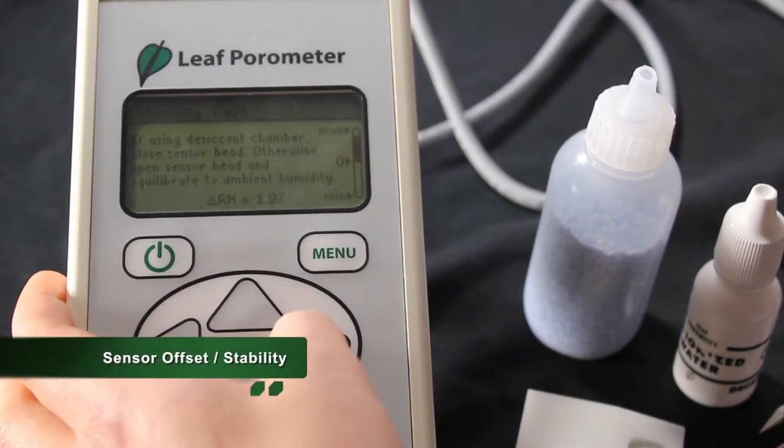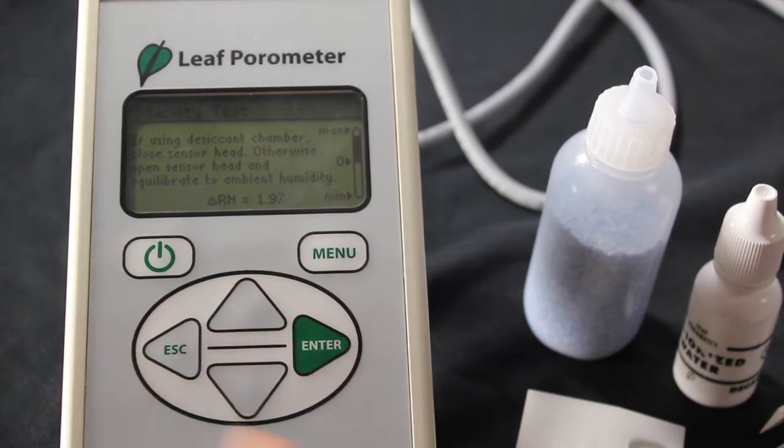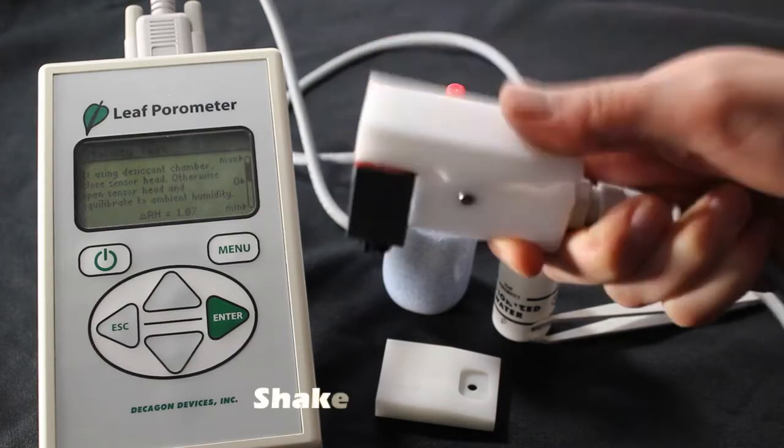Before beginning a calibration, the leaf porometer checks to make sure that the two sensors in the sensor head agree well with each other. For the sensors to agree, the air and the diffusion path should be well mixed. To do this, you will need to wave the sensor head up and down enabling the bead inside to mix the air.